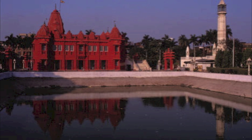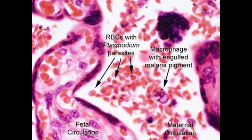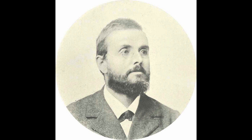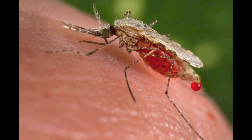Ross was in India working on dissecting the stomachs of mosquitoes. It was here that he found evidence of pigmented cysts in the stomachs of these mosquitoes, which looked like the cysts found in patients suffering with malaria. From this, Ross was able to work out the life cycle of the avian malaria parasite and go on to pioneer using nets to prevent mosquito bites while sleeping. An Italian group, led by Giovanni Grassi, showed in 1898 that the human form of malaria is carried by the Anopheles mosquito, and went on to show the life cycle of this mosquito.